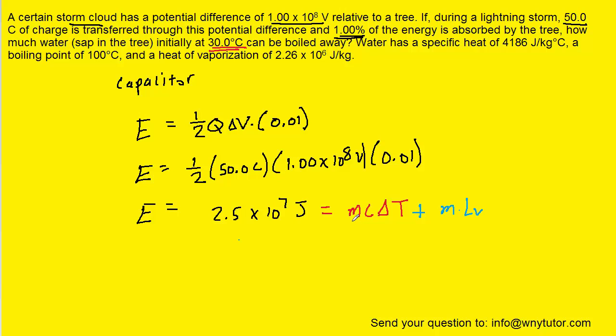Now we can see that a factor of m is present in both terms, so we can factor that out, and that would leave us with c∆T plus the latent heat of vaporization. We're trying to solve for the mass of water, so we can divide both sides of the equation by this term in parentheses.